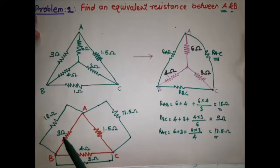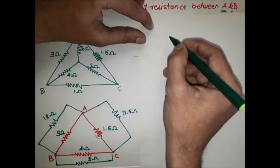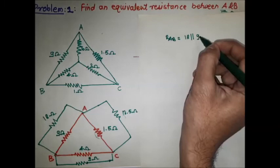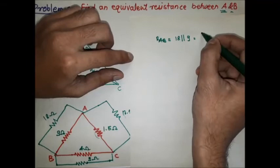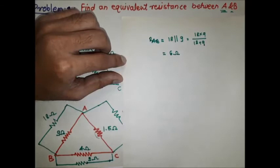In the new circuit, the 18 ohm and 9 ohm resistances are in parallel. The equivalent resistance for the AB branch: RAB = 18 ║ 9 = (18 × 9) / (18 + 9) = 6 ohm.